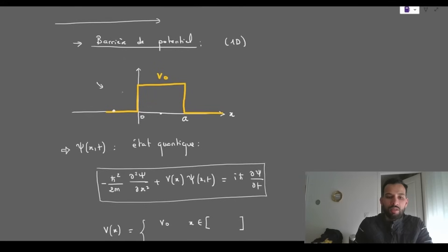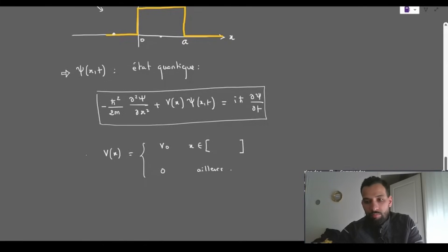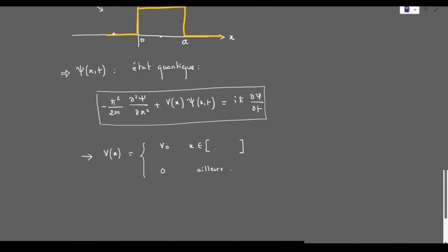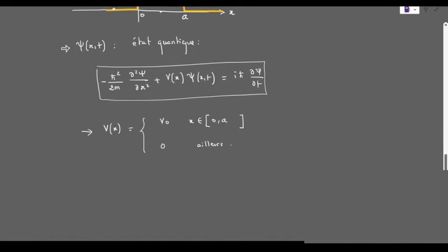In this first part, we will see the solution of the Schrödinger equation when a particle is subjected to a potential which corresponds to a barrier of height V0. The potential is modeled by V(x) equal to V0 between 0 and A, and equal to 0 elsewhere.